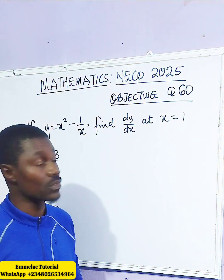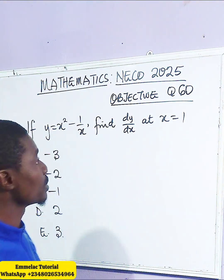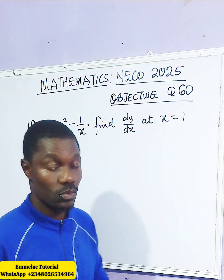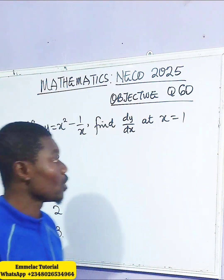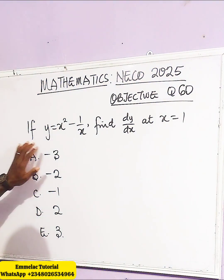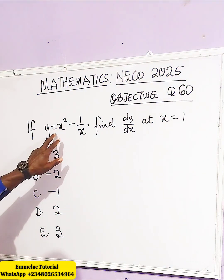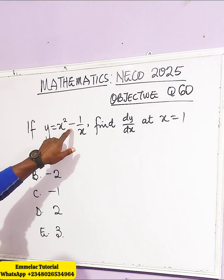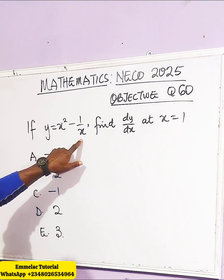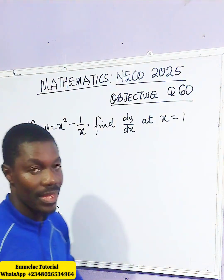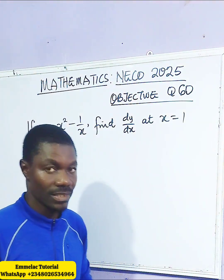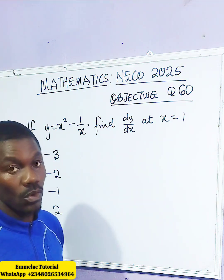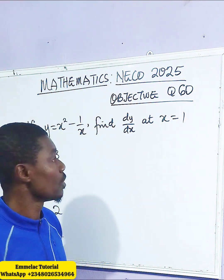Welcome to your Mielek online tutorial. Before us is question 60 of the NECO 225 objective question. It shows that if y equals x squared minus 1 divided by x, find dy/dx at x equals 1.